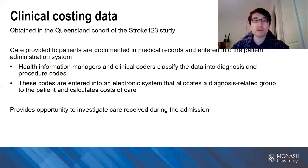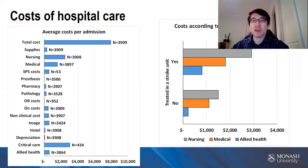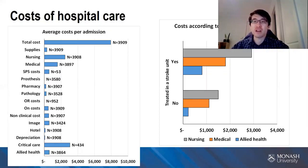Having this data provides us an opportunity to investigate care received during the admission. In this subgroup, the median cost of all cases was around $8,000. The majority of people incurred medical and nursing costs, around $1,500 and $2,500 respectively. A minority incurred critical care costs, which was a high cost relative to other cost buckets, around $3,000. By linking this clinical costing data to the OSCA, we've also been able to look into novel questions such as costs related to stroke unit care, which is one of the treatments monitored using the OSCA data.